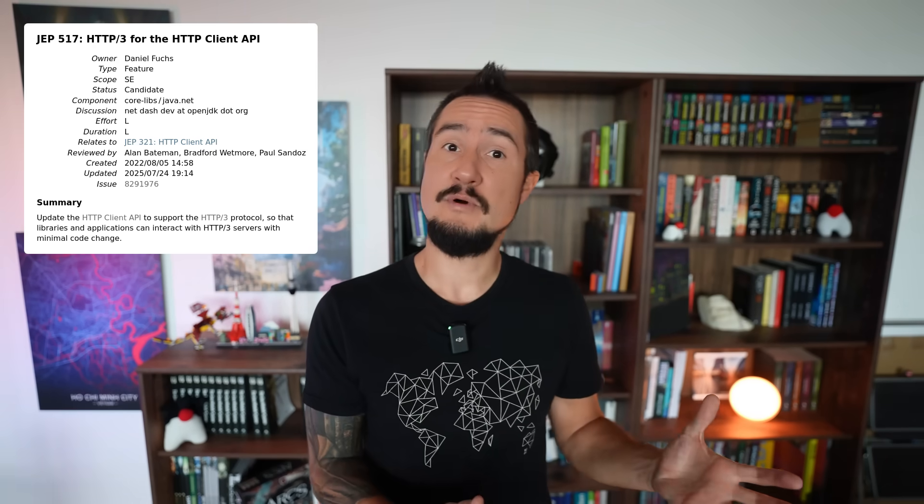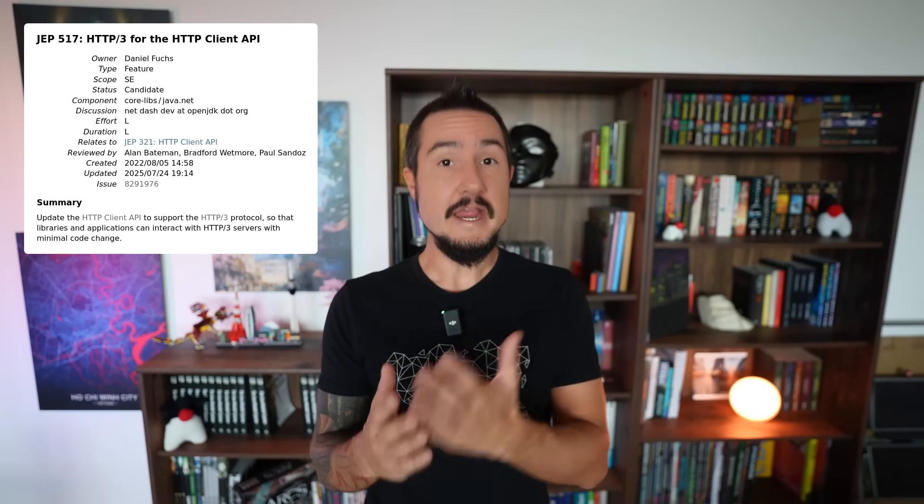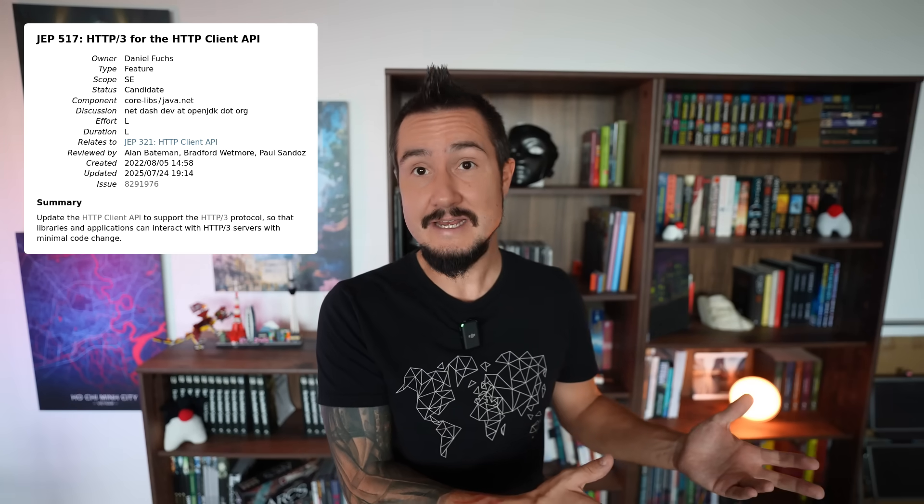Welcome everyone to the Inside Java Newscast, where we cover recent developments in the OpenJDK community. I'm Nikolai Parlog, Java Developer at Oracle, and today we're going to talk about JDK Enhanced Proposal 517: HTTP 3 for the HTTP Client API that was introduced in Java 11. We'll also have an AMA soon, where you get to ask your questions and we make the OpenJDK folks answer them. More on that at the end of the video. Ready? Then let's dive right in.